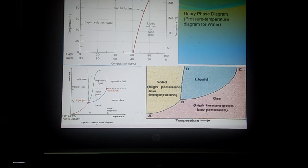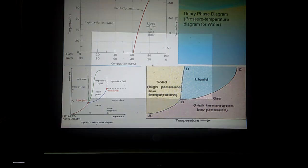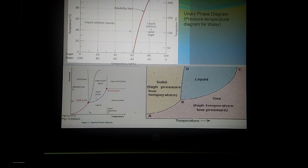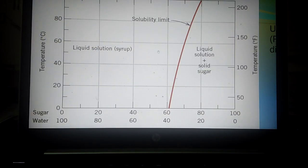Next is the solubility limit. So here in the diagram, you can see solubility limit. First of all, what is solubility? It is the maximum concentration of a solute atom that may dissolve in a solvent to form a solid solution. So here solute is sugar and solvent is water.